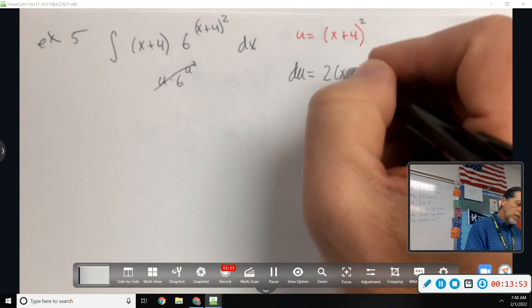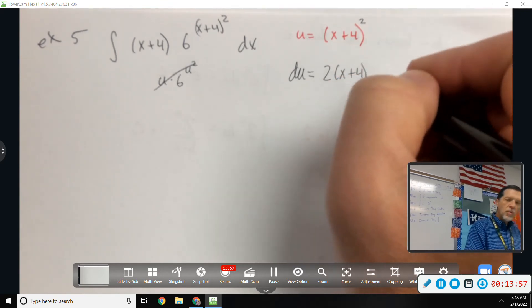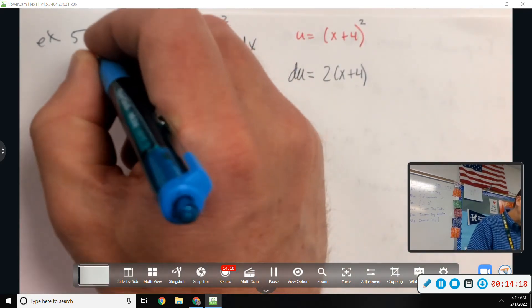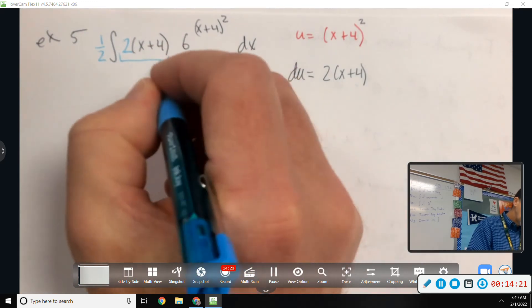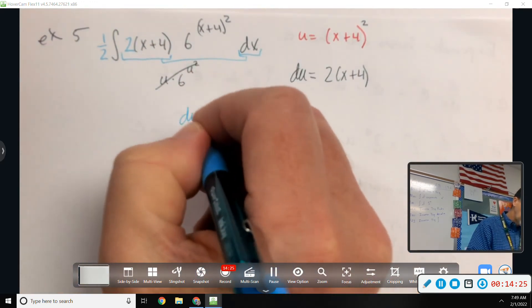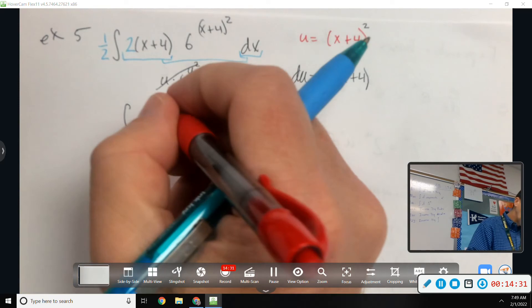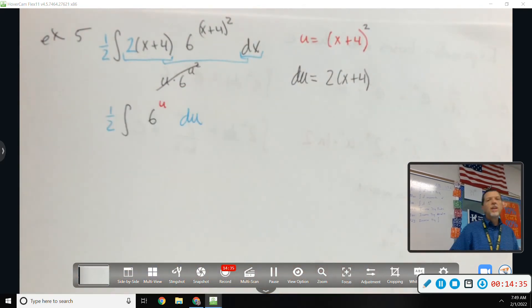So, that would be 2 times X plus 4 to the first times 1, right? If I take its derivative, decrease the power by 1, multiply by the chain rule, I end up with 2 times X plus 4. Is that a good situation or not? Yeah, that's pretty good. It's really good because all I need now is a 2 on that one and a 1 half out front and that combination of stuff makes DU. Integral of 6 to the U DU with a 1 half out front. Again, use substitution and you pick it right, it turns your problem into an easy, hopefully easy problem.